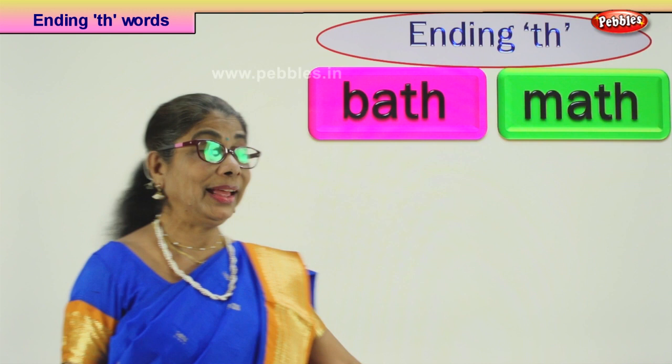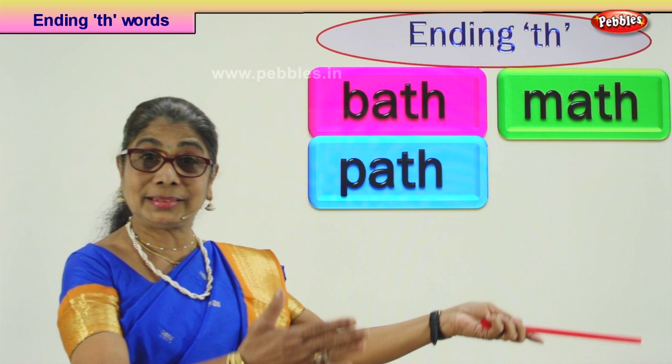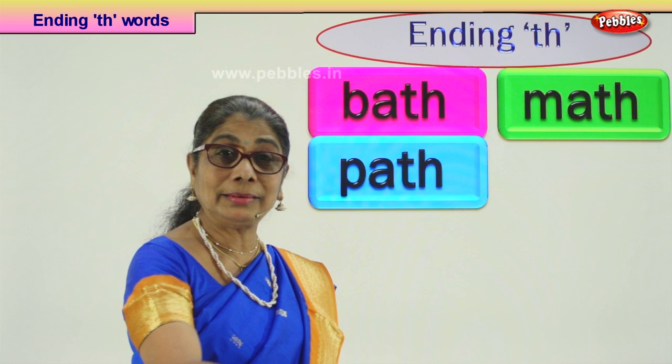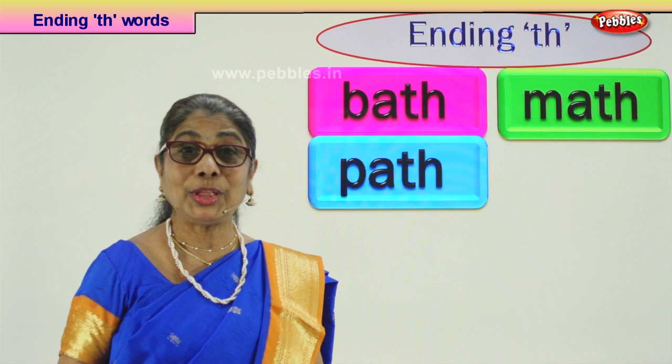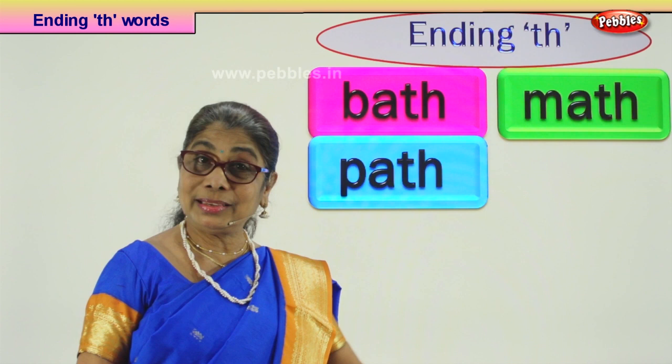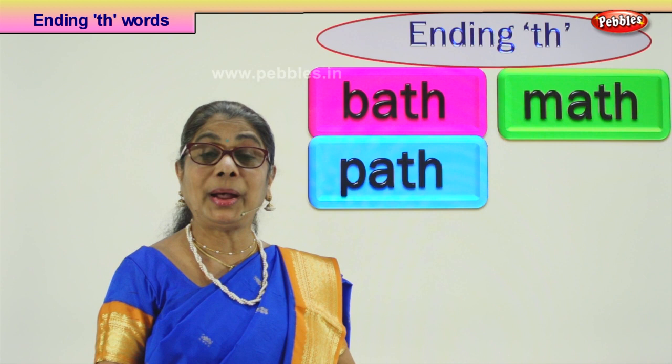Next, look at our next word. What is it? Read aloud — path. If you go in a garden there will be a path; they will put bricks and there'll be a path to walk. If you go on the road there is a path for the pedestrian — a special path on both the right and the left side.